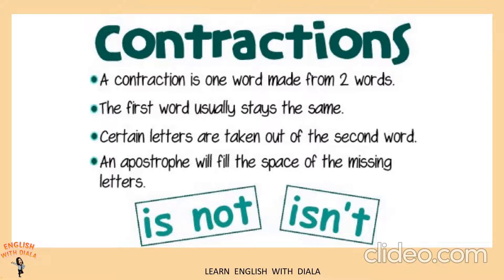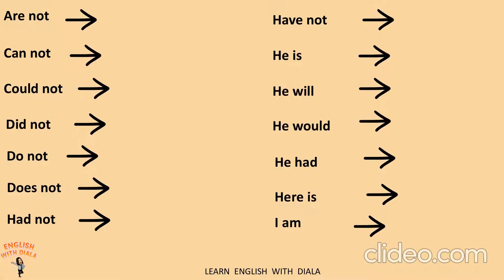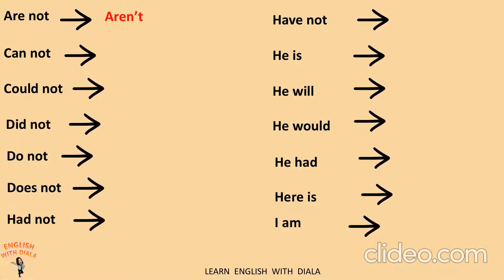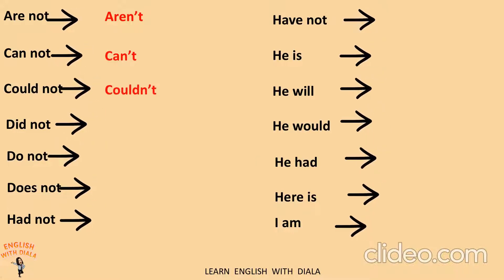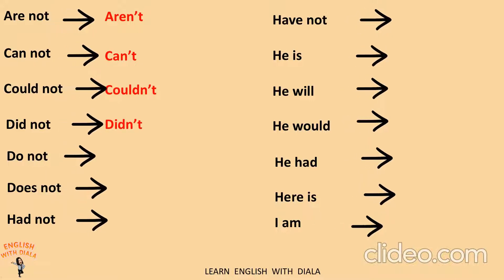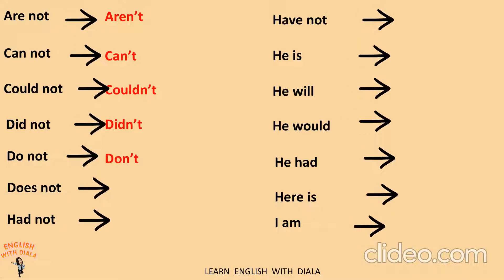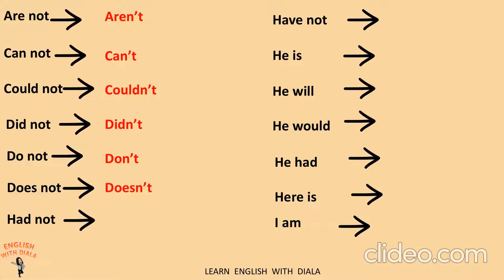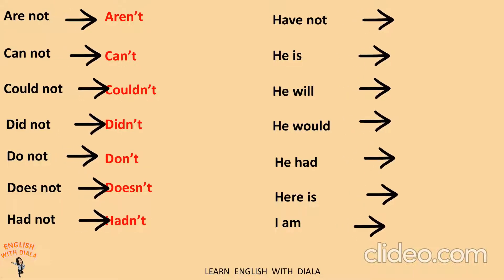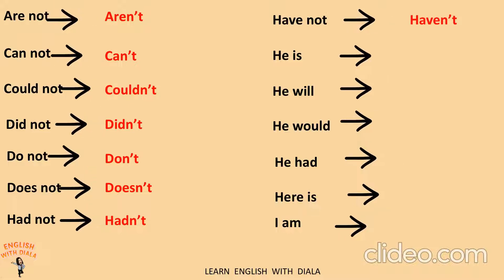Here's a list of contractions. Are not — aren't. Cannot — can't. Could not — couldn't. Did not — didn't. Do not — don't. Does not — doesn't. Had not — hadn't. Have not — haven't.